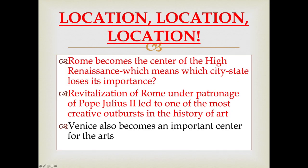Just like the Early Renaissance was all about Florence — trade and wealthy merchants — the location of where High Renaissance art is created shifts. Rome becomes the home of the Renaissance. The key reason is a humanist pope named Pope Julius II, who leads the charge for the creation of new art. Florence loses its importance, and we see the revitalization of Rome under the patronage of Pope Julius II, who spends a lot of Catholic offering money to create frescoes, architecture, and all sorts of things.